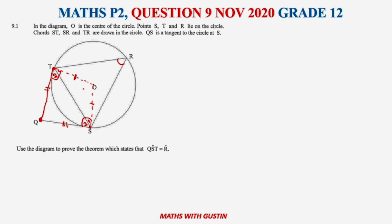This labeling is just for the sake of understanding — you can draw this while writing and the examiner marking your answer sheet will be able to follow easily. Now we can see that angle OSQ equals 90 degrees. The reason is that the radius is perpendicular to the tangent.